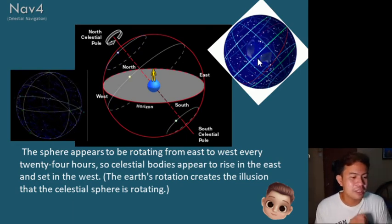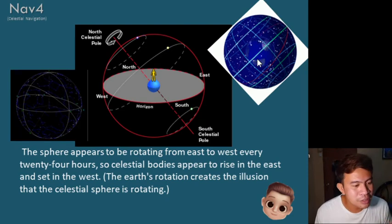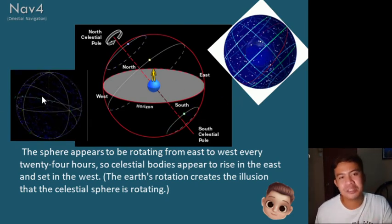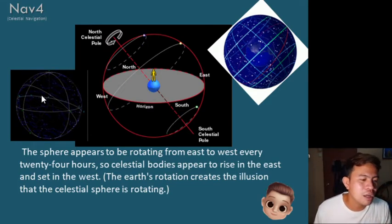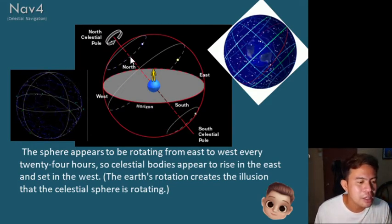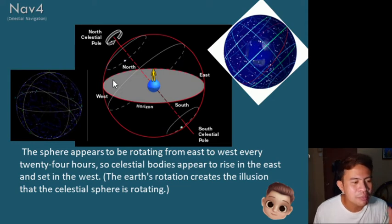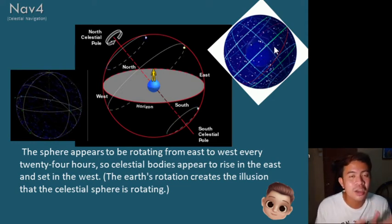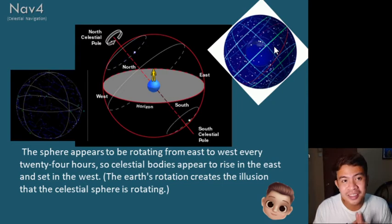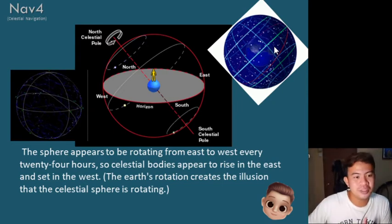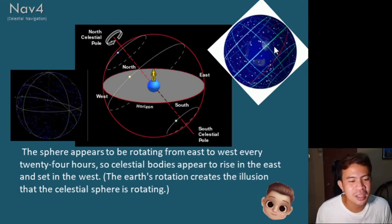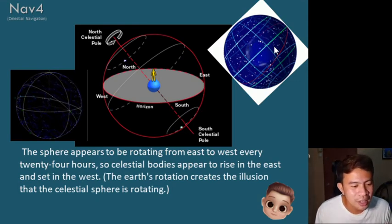The Earth's rotation creates the illusion that the celestial sphere is rotating. When we observe the stars rotating on the celestial sphere, what is actually happening is the Earth is rotating, not the stars themselves. It is just how we perceive or see the stars in the sky.